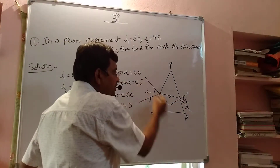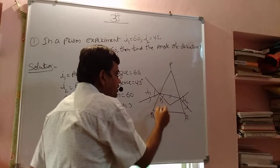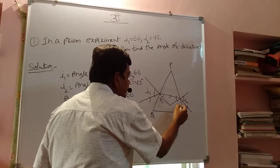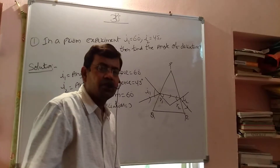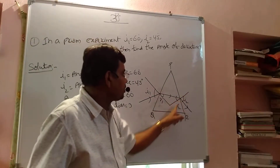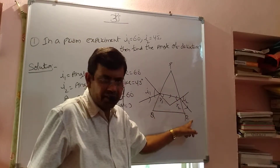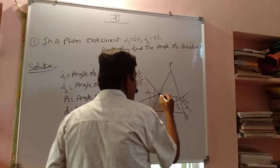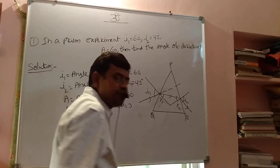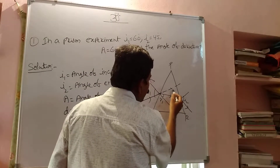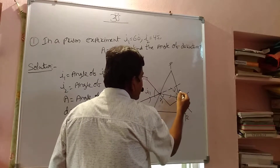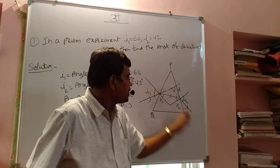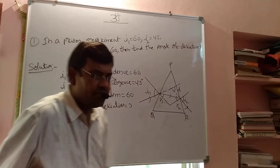Similarly, the angle between the normal and the refracted ray is called the angle of refraction. There is another angle of refraction on the other side. The angle between the normal and the emergent ray is called the angle of emergence. Now, extending the incident ray and the emergent ray, the angle between them is called the angle of deviation.